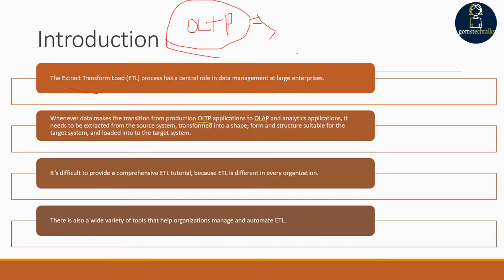If we want to analyze which country or state has the highest sales, or which product like pizza or cake has the highest demand, we convert from OLTP to OLAP. The data needs to be extracted from the source system, transformed into a suitable shape and structure, and loaded into the target system. ETL differs in every organization, so I'll teach the general components used in most organizations.